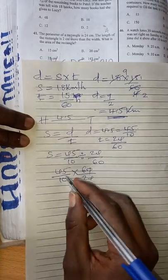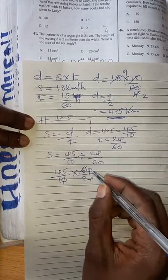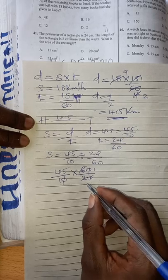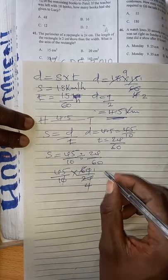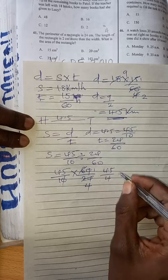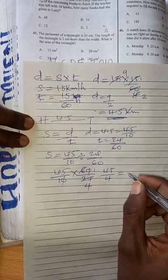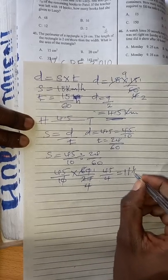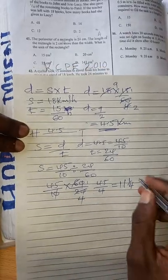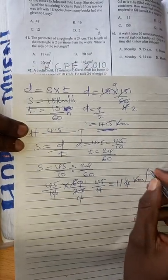And this zero goes to this zero, by 6 to get 1, by 6 to get 4. So you have 45 over 4, which translates to 11 and 1 over 4. These are kilometers per hour.